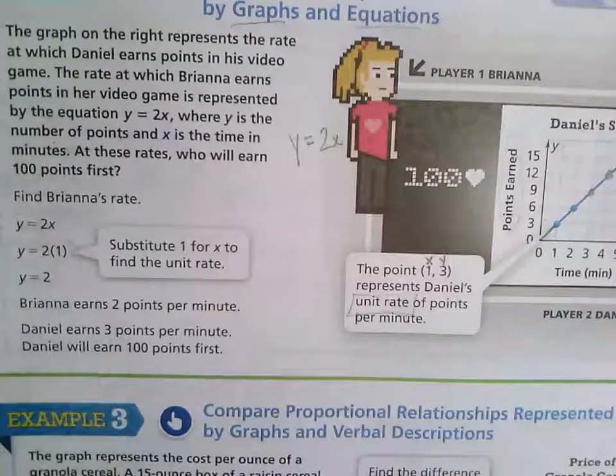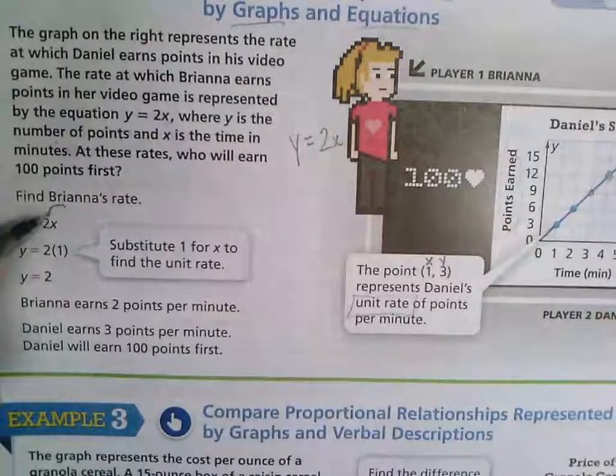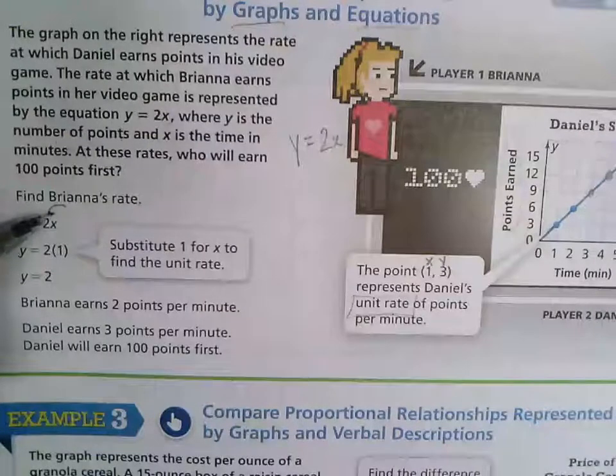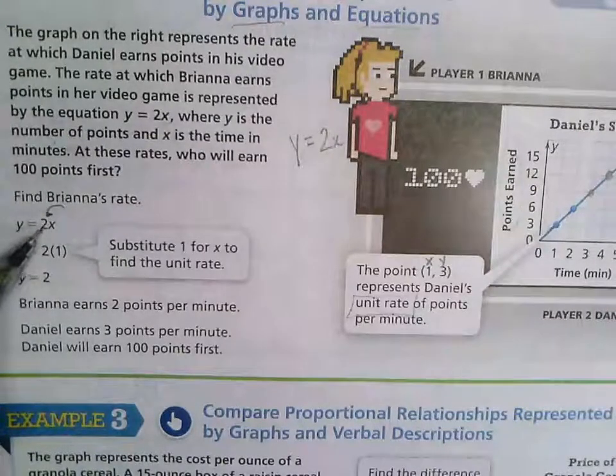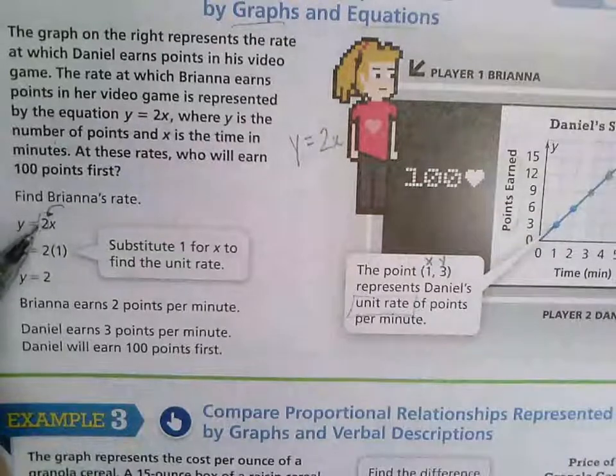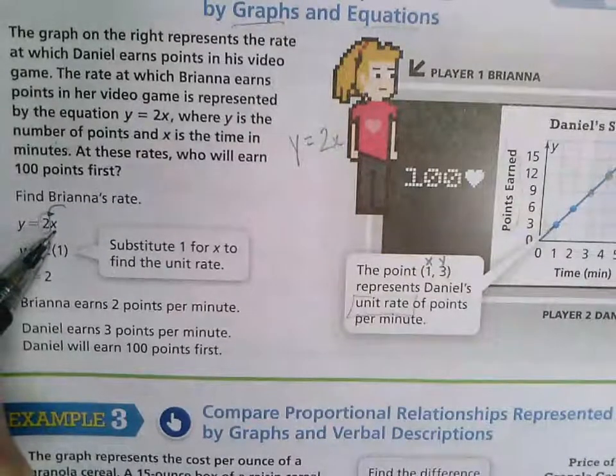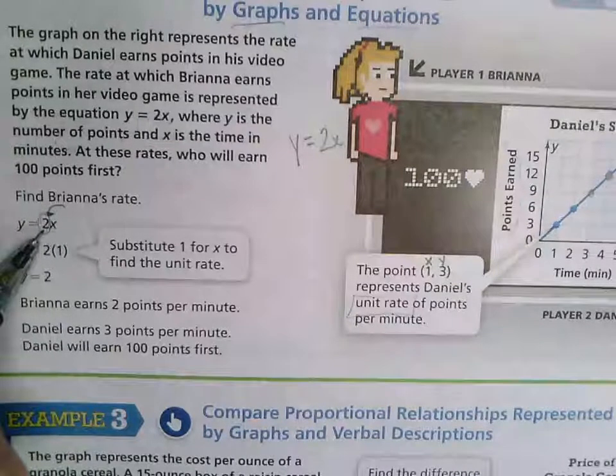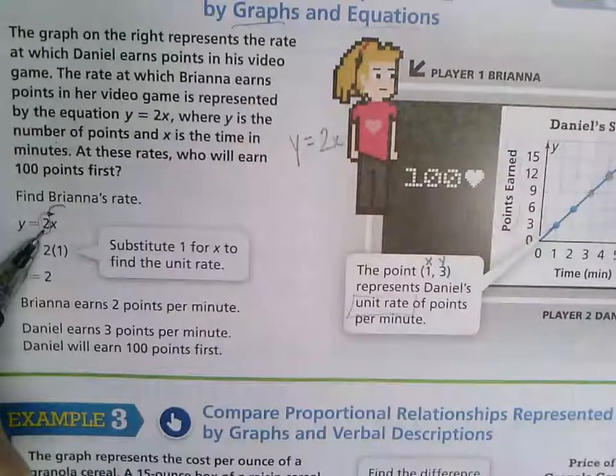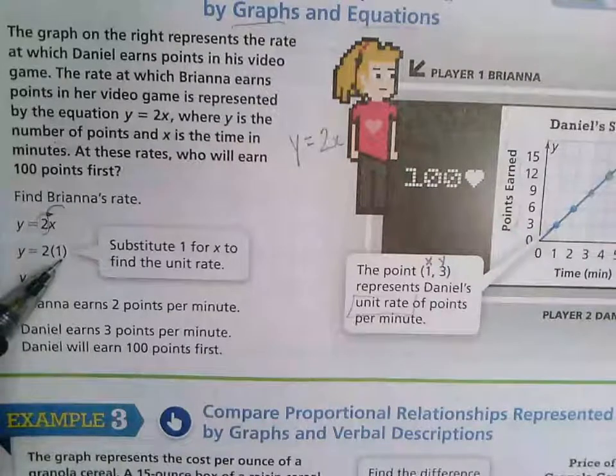I would argue that you know that her unit rate is 2 because it is the coefficient that is in front of the variable x. So this is the unit rate right here. They went ahead and put the 1 in there for you to show you how that works out.